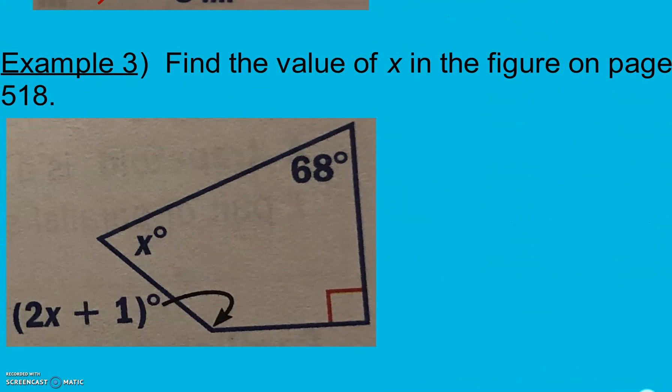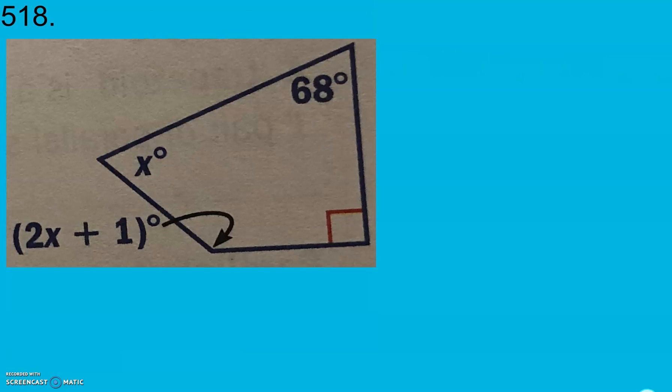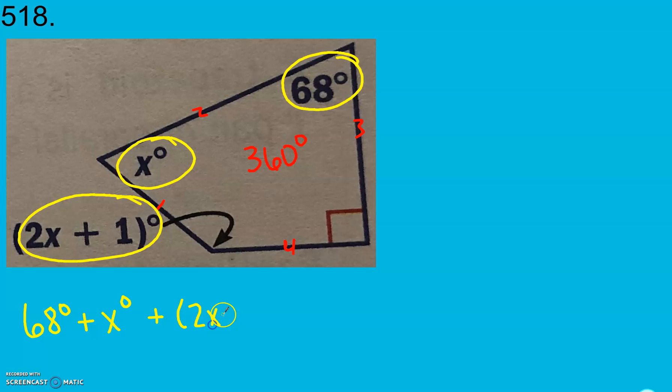In example three, we're going to find the value of x in the figure on page 518. We know that all of the angles in a quadrilateral, which is what we have here - one, two, three, four sides - are going to add up to 360 degrees. I'm going to take all of my angles, 68 degrees, x degrees, 2x plus 1 degrees, and this right angle which is 90 degrees, and they're going to equal 360 degrees.